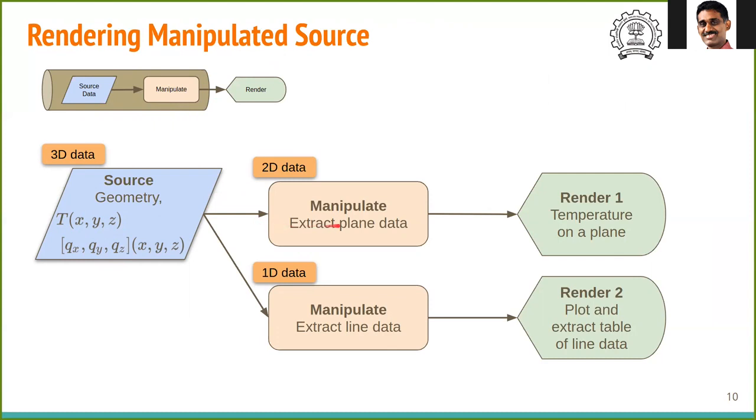Instead of the surface temperature, suppose we want to know the temperature distribution across a given plane. Then we extract the temperature across this plane and render it. This is two-dimensional data. We may also need to know how the temperature varies along a given line. In this case, we have to extract the line data and plot it or save it to a table.